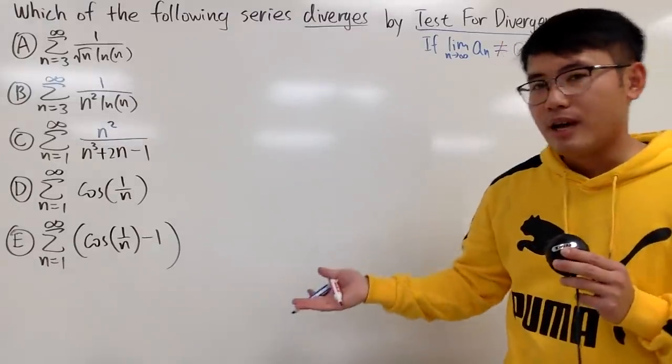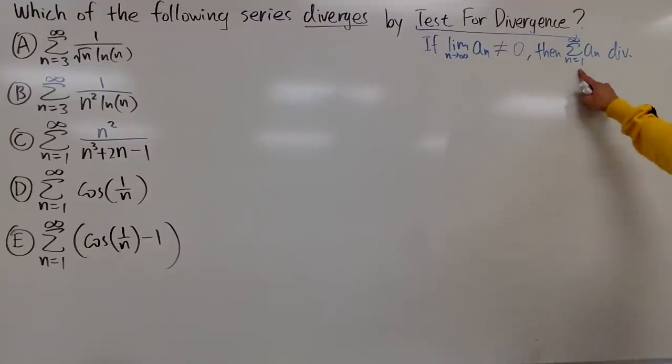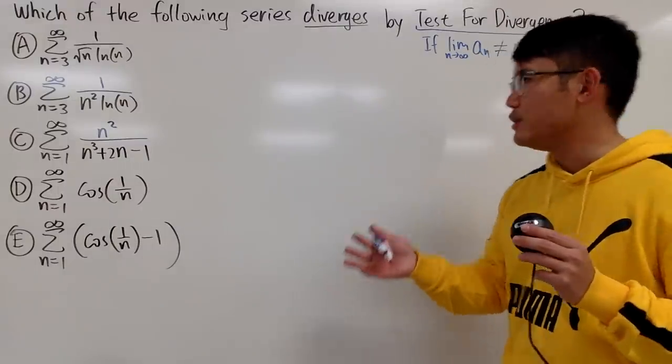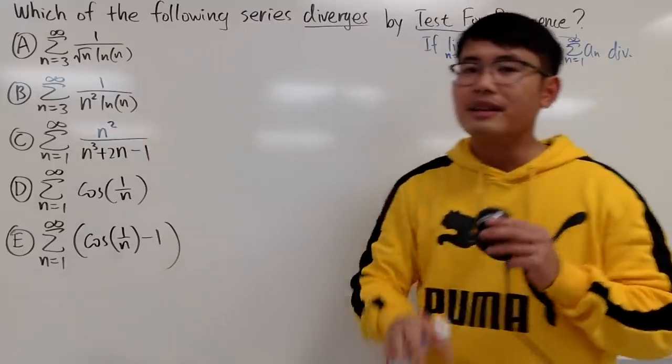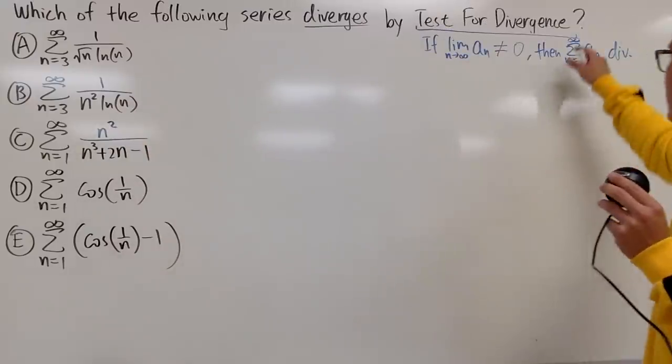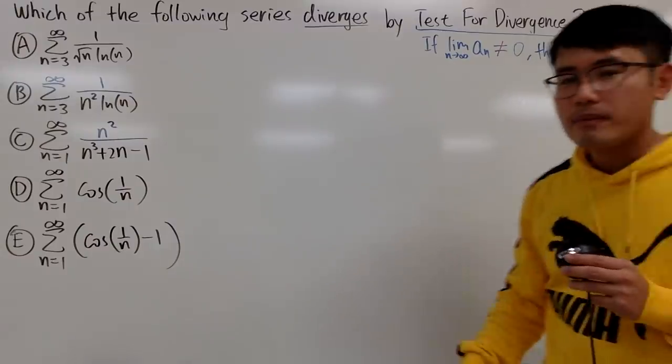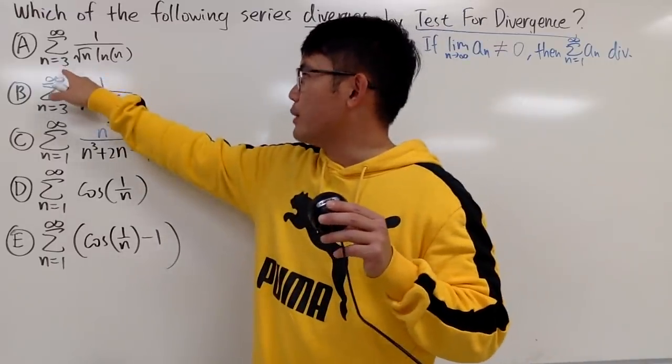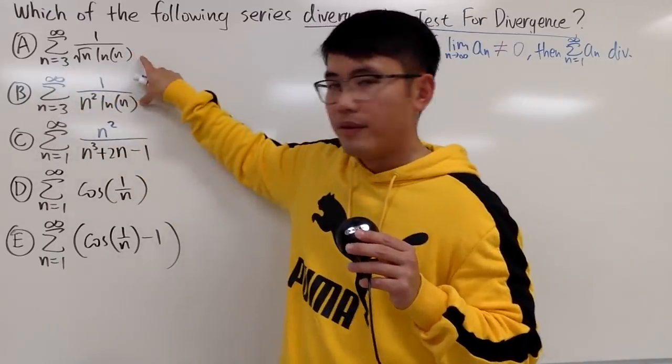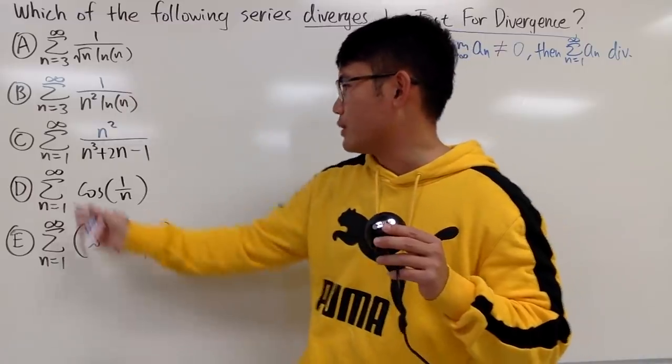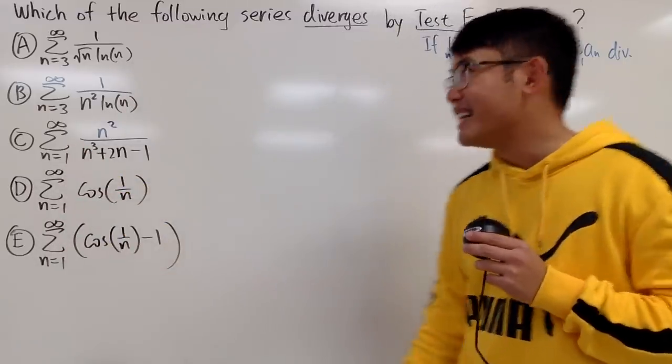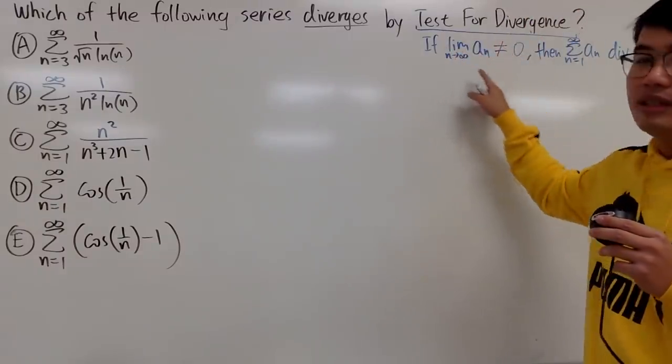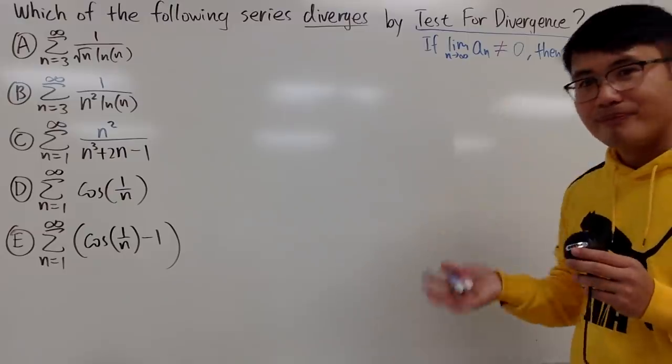And before we do anything else, let me just make a small remark. The starting value of n right here doesn't matter. You can say n equals 1, n equals 11, n equals 3 like this. It doesn't matter, right? Or we care about just infinite series. Maybe you guys can also leave a comment down below and let me know why did I start with n equals 3 right here for the first two series, and the other ones I will just start at 1. So in order for us to use the test for divergence, this is the check that we have to do.